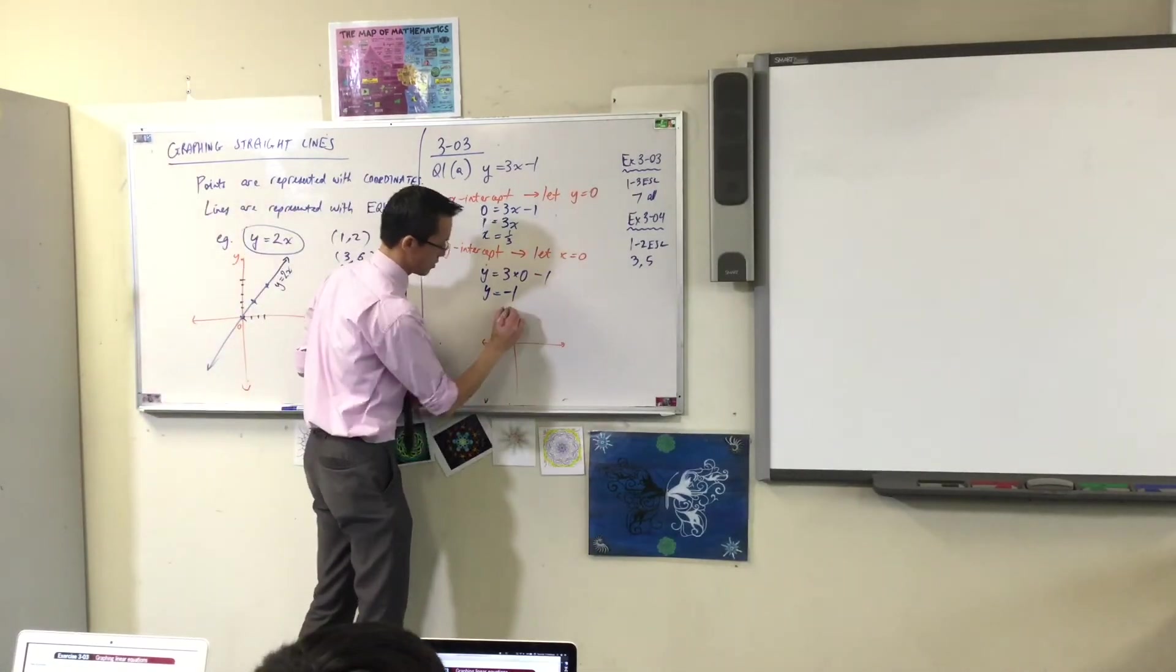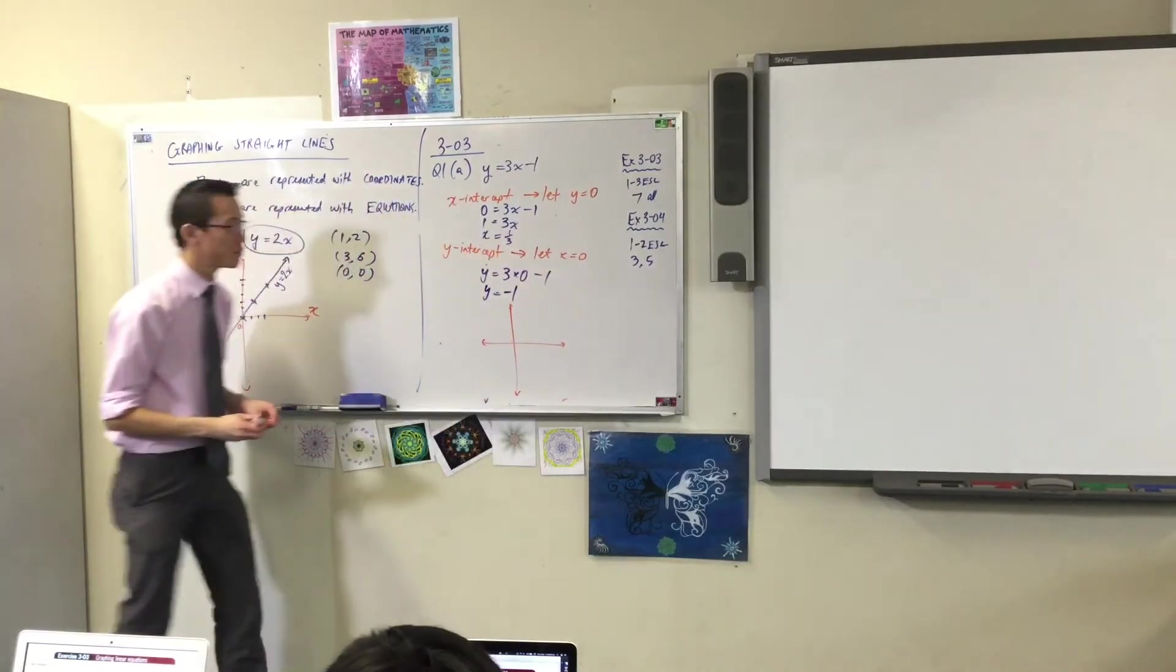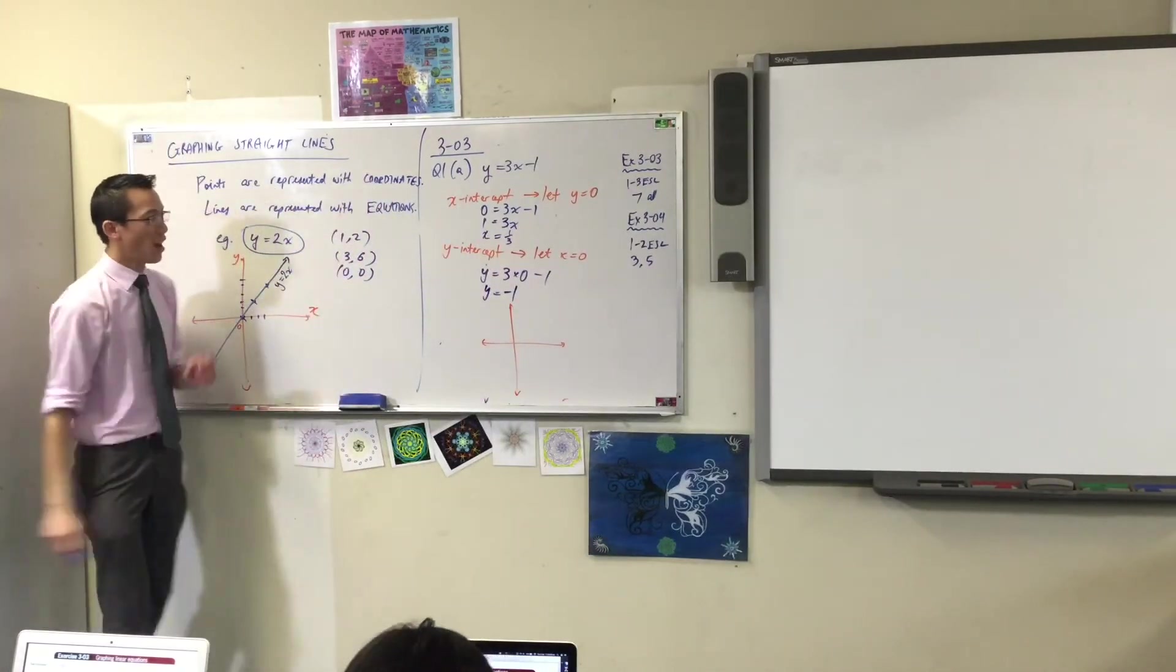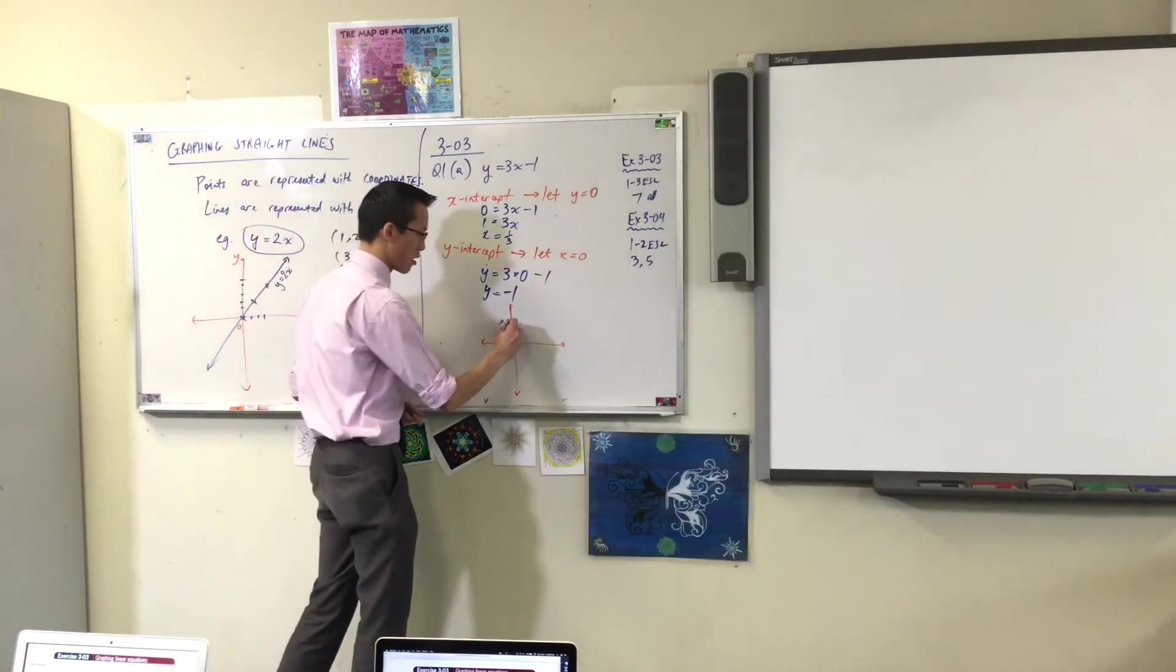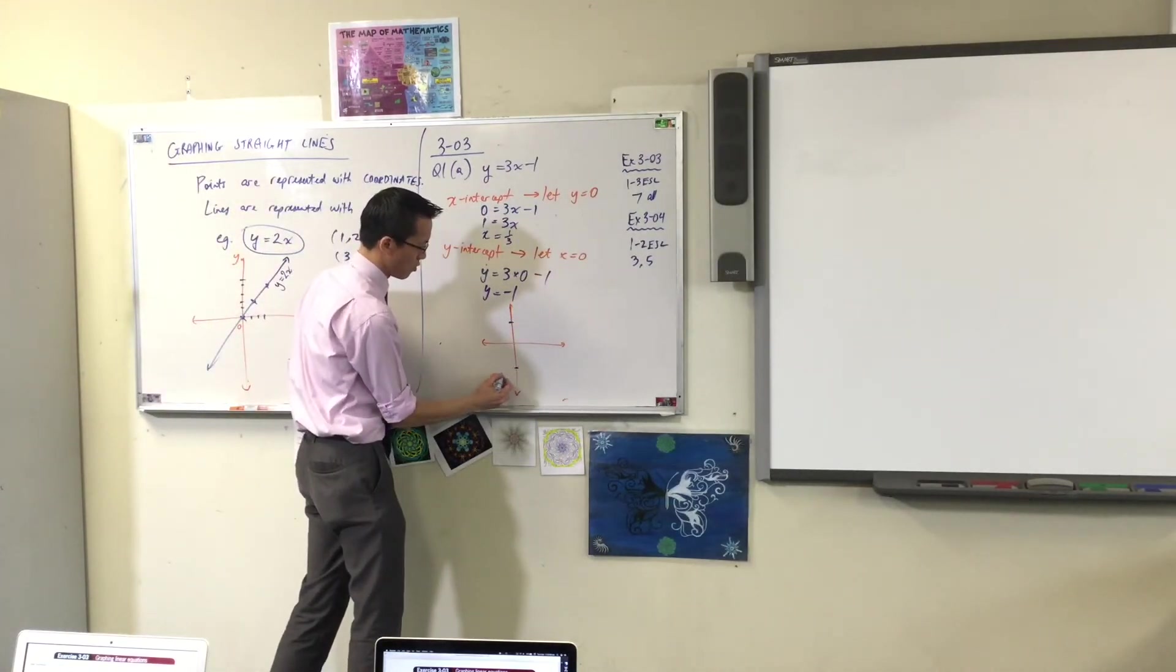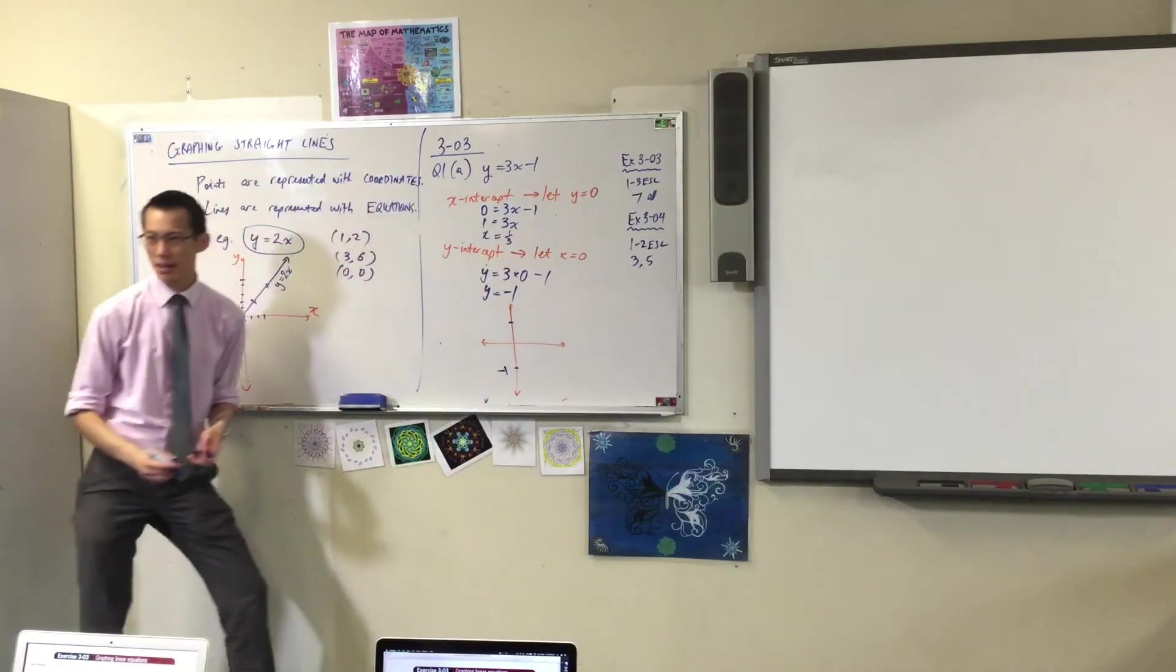Now we've got all the information we need. Draw yourself a set of axes. Like so. Choose an appropriate scale. So I'm actually going to put negative 1, whoops that's a positive 1, I'm going to put negative 1 all the way down there.